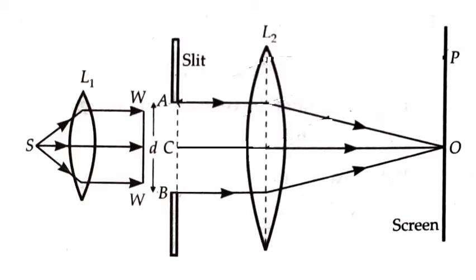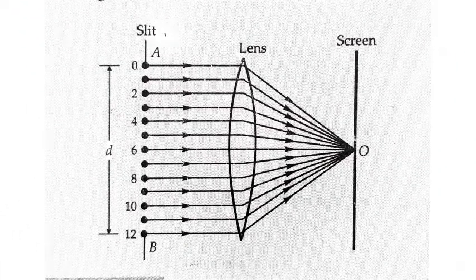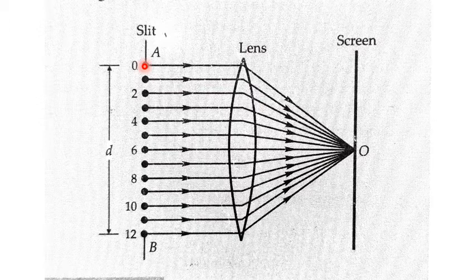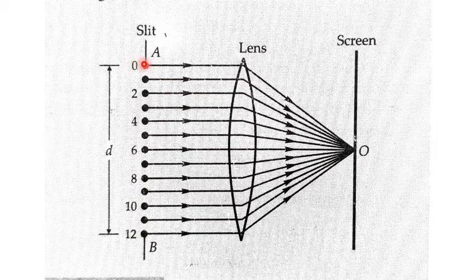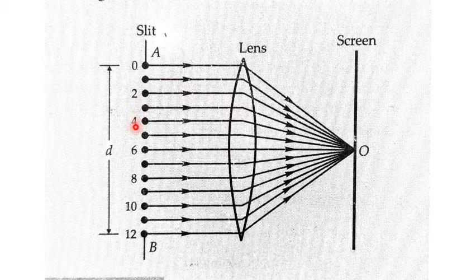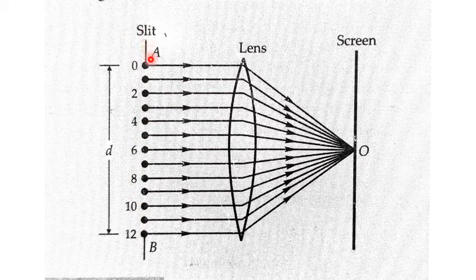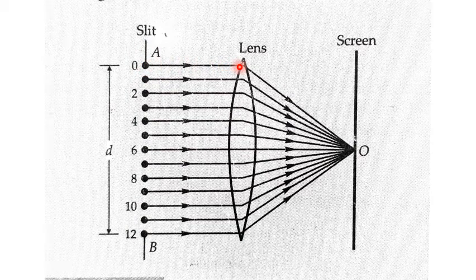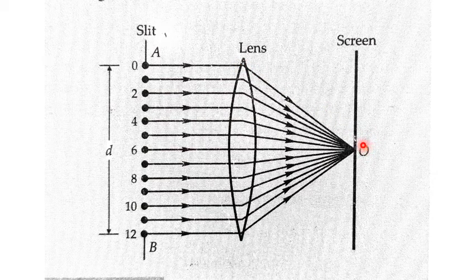When all of the light strikes the surface at O, let us divide the slit into secondary sources, numbering them zero through twelve. The light coming out of these twelve sources all passes parallel to each other, and after passing through the lens they are made to focus at point O on the screen.